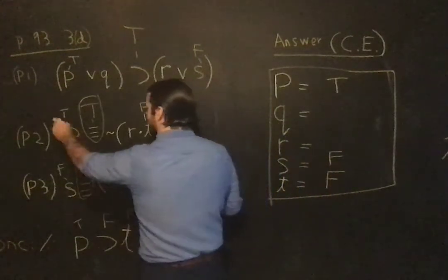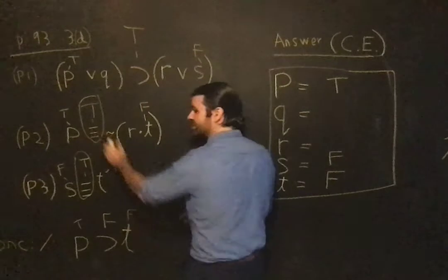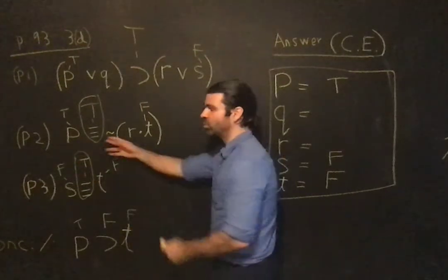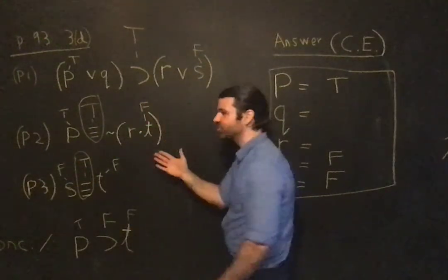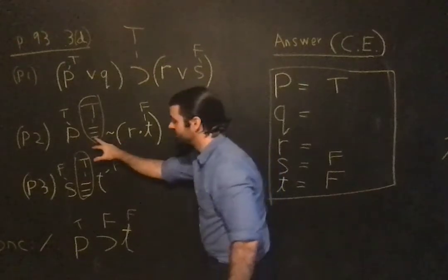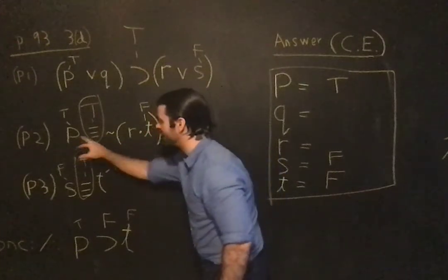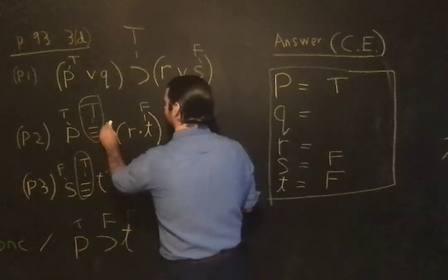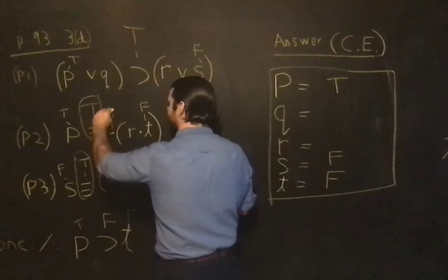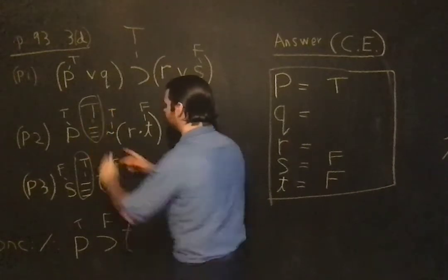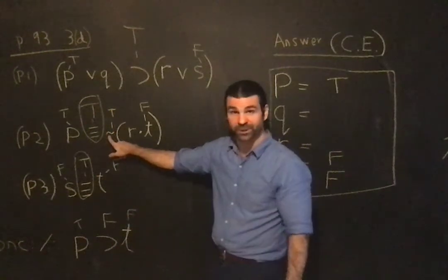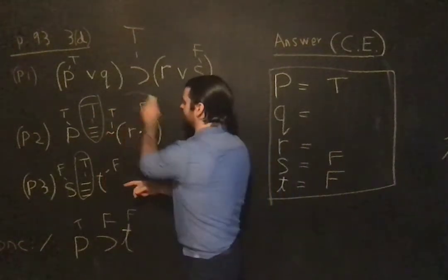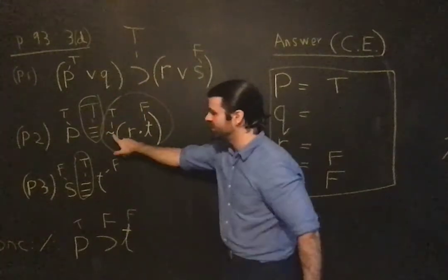So this is true — the biconditional has to be true. P is true, so what else has to be true? The other side of the biconditional, which is the negation — that has to be true. The negation has to be true, because that's the major operator of that sub-formula.